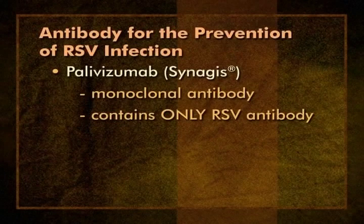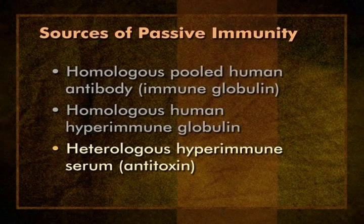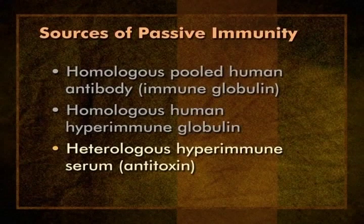A third antibody product is heterologous hyperimmune serum, also known as antitoxin. Antitoxin is different because it's produced in horses, not humans. Equine antitoxin is used in the United States for treatment of diphtheria, botulism, and some snake bites. The problem with equine antitoxin is that the immune system may identify the horse protein as non-self and develop an immune response to it, resulting in a condition known as serum sickness. We'll come back to passive immunity a little later because the presence of passively acquired antibody may reduce the effectiveness of some injected live virus vaccines.